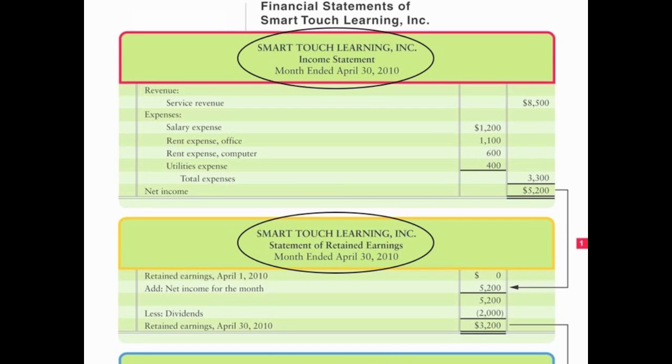Now let's look at the statement of retained earnings. Again, look at the title — three lines, very similar to the income statement title. The statement of retained earnings also covers a period of time, for example month ended in this case. It could be quarter ended or year ended, but it is a period of time.